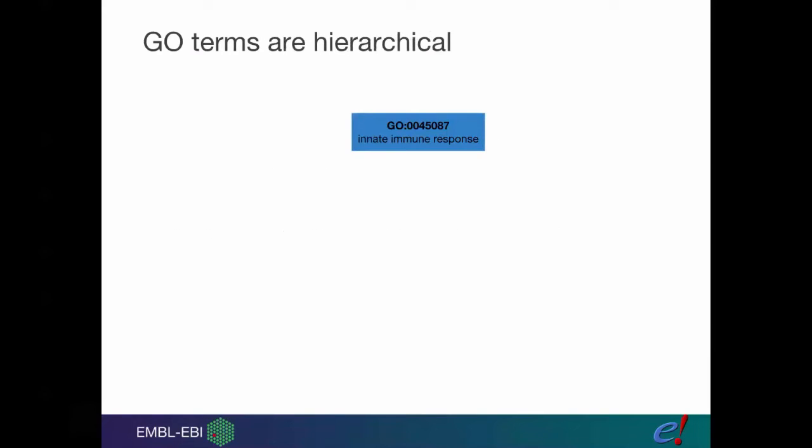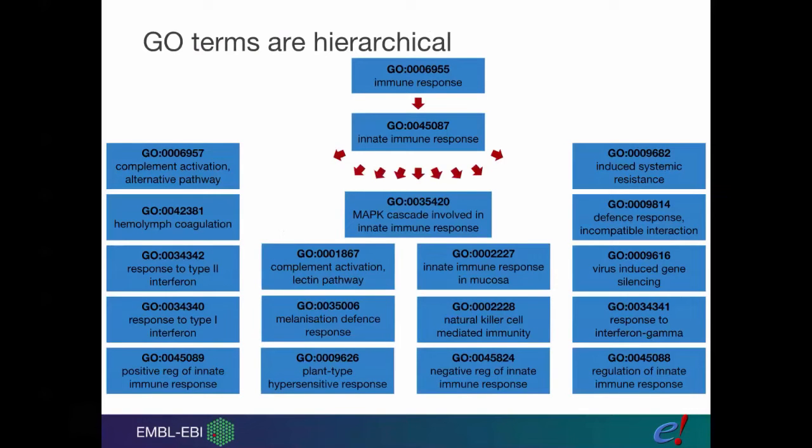The other benefit is that they form a hierarchy. Innate immune response is itself a daughter term of the term immune response. It then has a number of daughter terms itself, such as the one we talked about before, natural killer cell mediated immunity. The benefit of this hierarchy—if I search the database for innate immune response, I won't just find all the genes that have innate immune response attached to them, but I will actually find all the genes which have all of these terms attached to them as well.